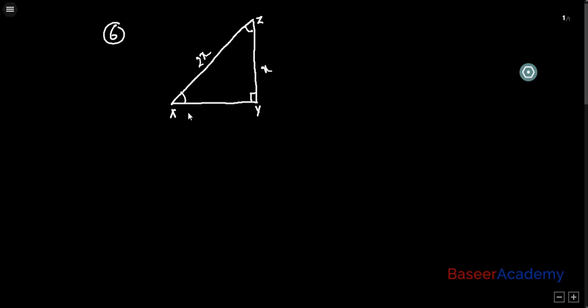With respect to this angle YXZ, the opposite side is YZ and the hypotenuse is XZ. So I know the opposite side and I know the hypotenuse. What is opposite by hypotenuse? Opposite by hypotenuse is sine. So I'm taking sine here.